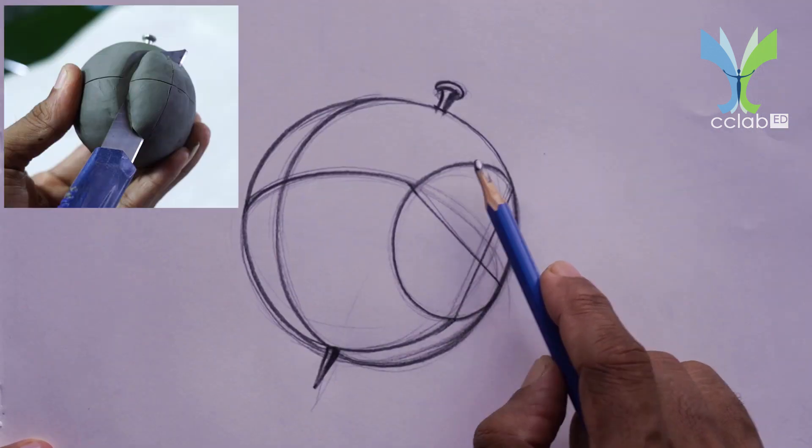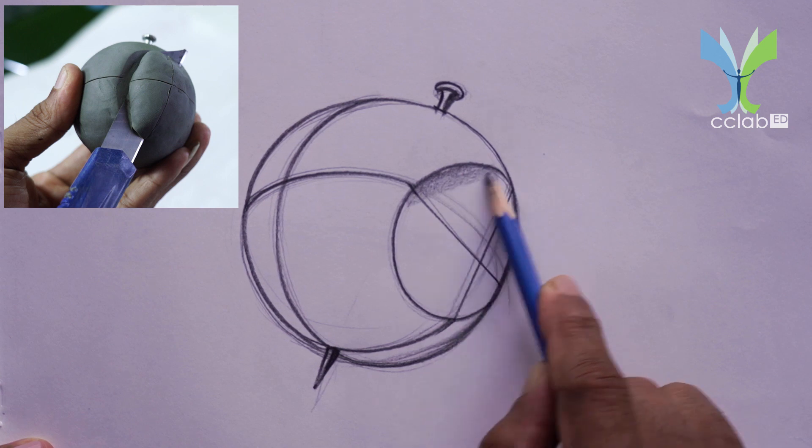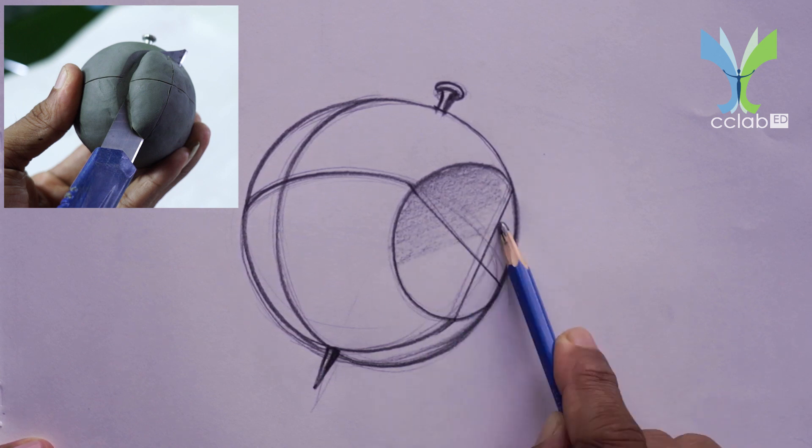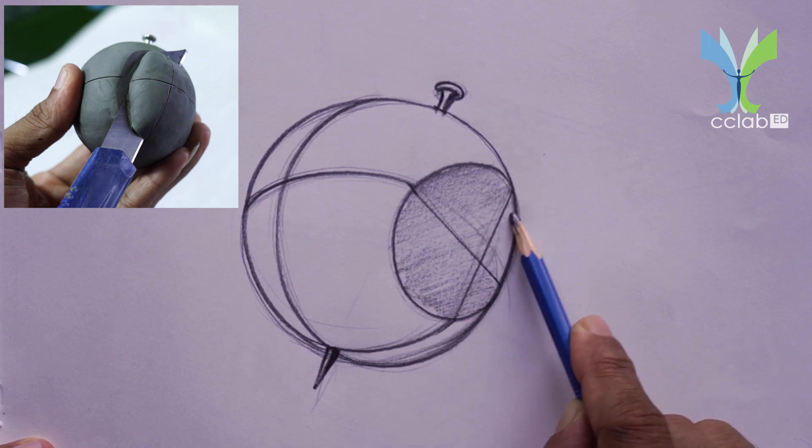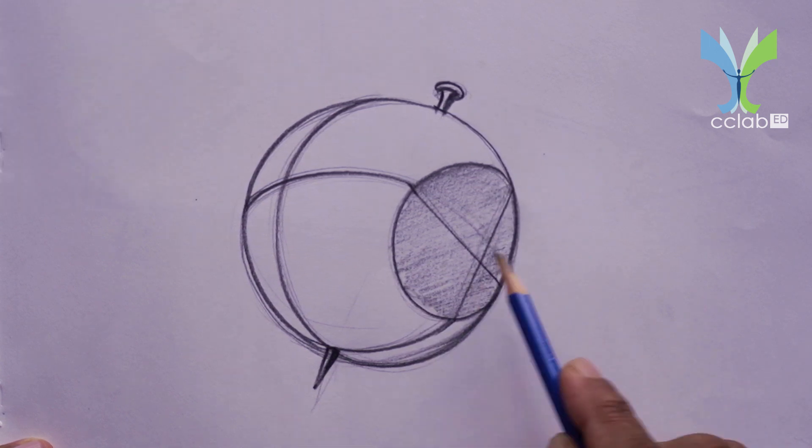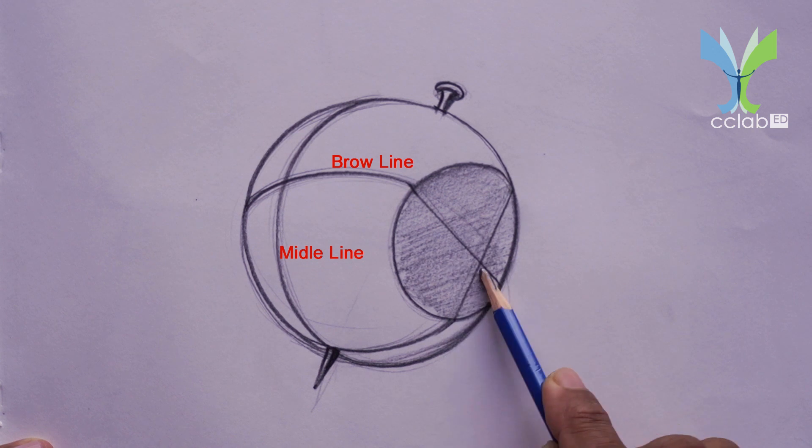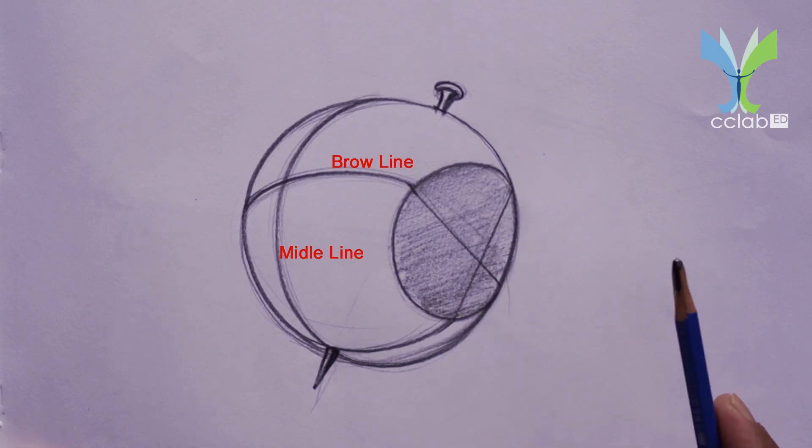Now if we were to slice off a fairly thin slice on each side, we will have produced a basic shape that very closely matches the cranium. The equator becomes the brow line. One of the lines through the axis becomes the middle line of the face.